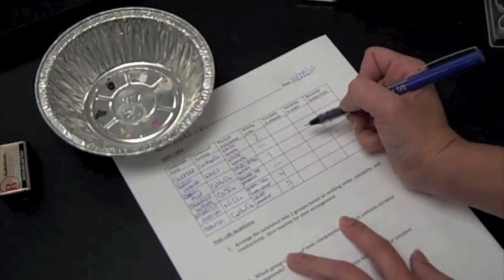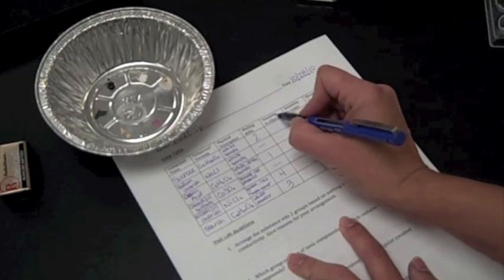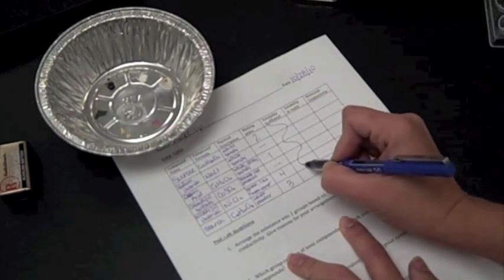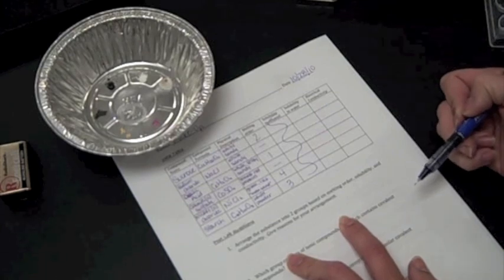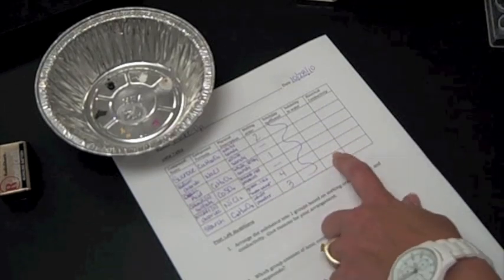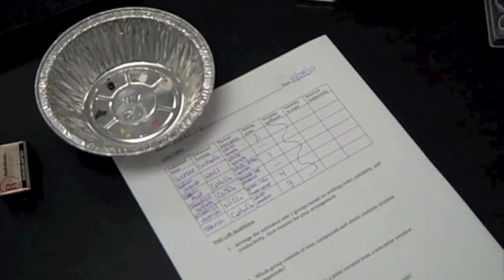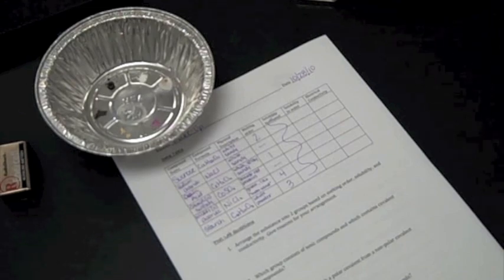Now for the solubility in ethanol part, we're actually going to omit that part. Don't you love it when you omit things? And we're going to go straight to the solubility in water just really to save time. And because this is the one that we need to test our electrical conductivity. So the solubility in water is what's next.